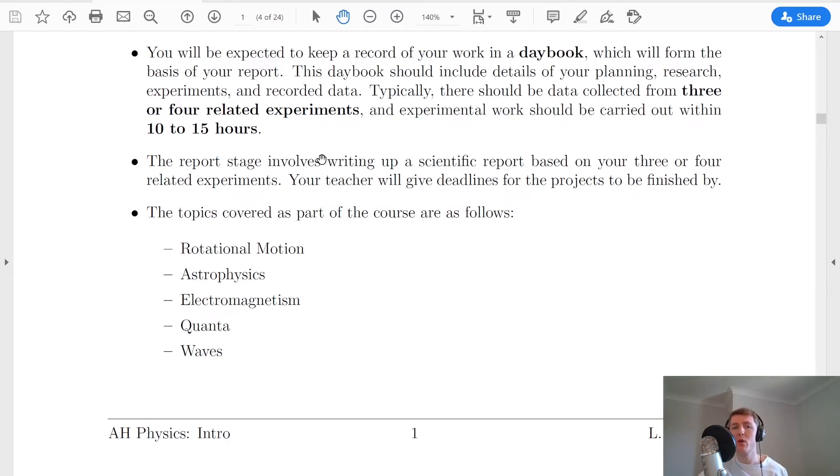Now, the report stage involves writing up a scientific report based on your three or four related experiments. And your teacher will decide your deadlines for you. So it's not like National 5 and higher where you're in class doing a final write-up for the report. You're probably going to do most of your writing at home. And it's up to you how you want to organize that.